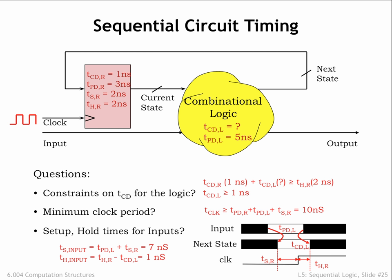In other words, if the input signal is stable at least 7 nanoseconds before the rising clock edge, the next state will be stable at least 2 nanoseconds before the rising clock edge and hence meet the register's specified setup time.